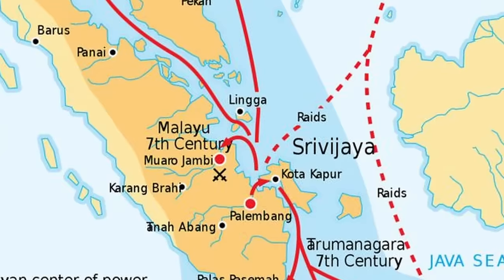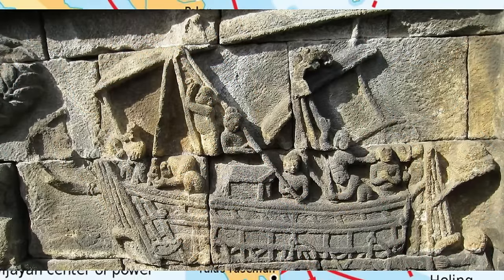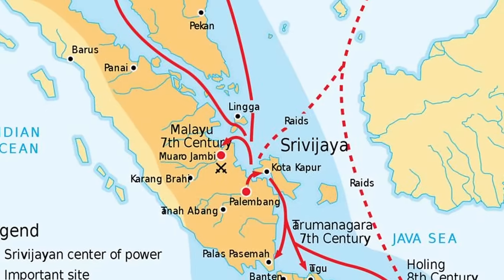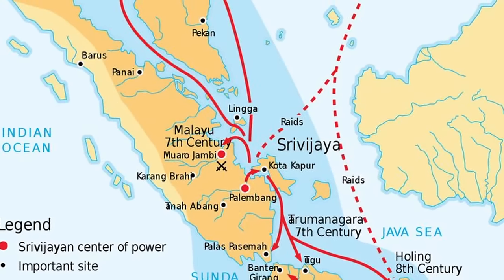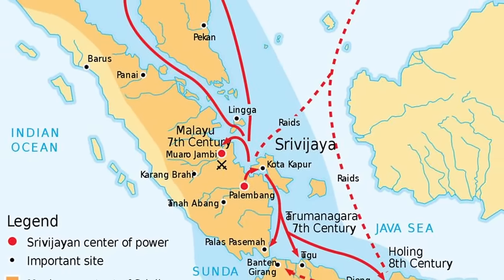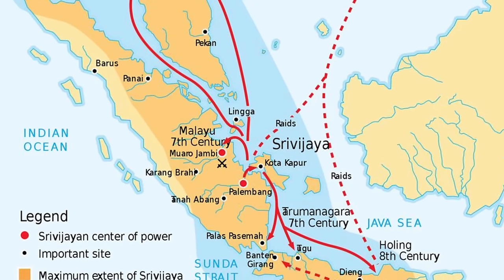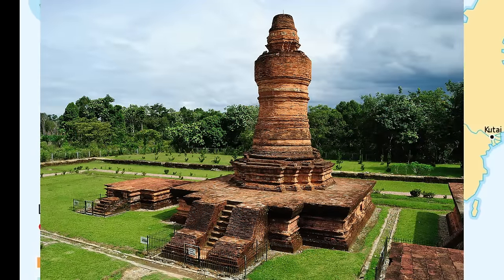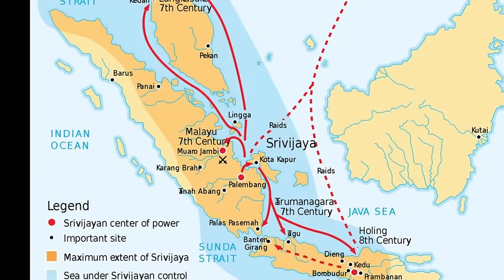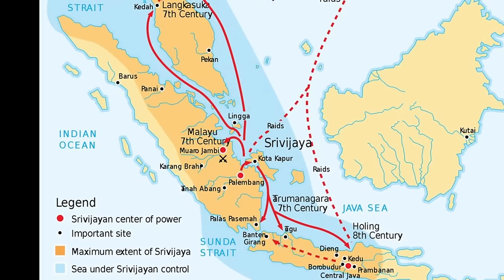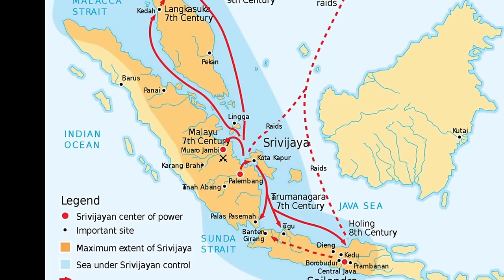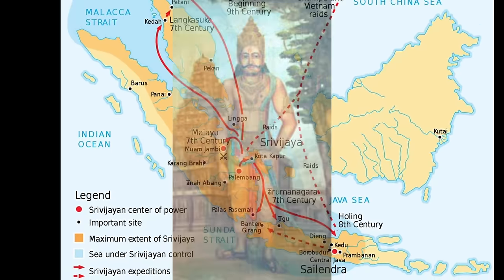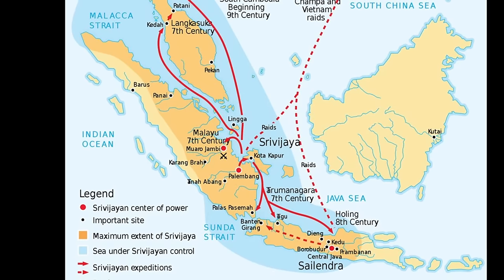The Srivijaya Empire was a strong naval and maritime empire in Southeast Asia, mainly on the island of Sumatra, that emerged in the first few centuries AD. Believed to have started around the 600s, the empire reached its heights from the 8th to the 13th centuries. Its capital was located in present-day Indonesia, thought to be around Palembang. It controlled the waters of Southeast Asia, growing wealthy off trade and controlling waterways. Buddhism and Hinduism were prominent in the empire. Over the centuries the empire began to weaken, with the invasion of Rajendra Chola I of the Chola dynasty in South India being a key factor in its fall.